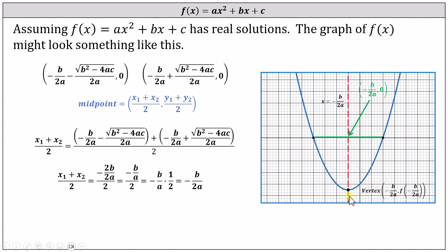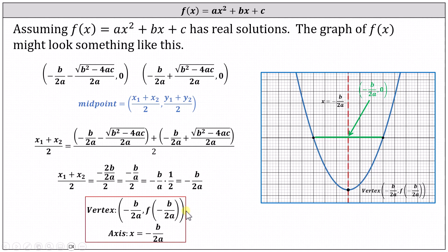The equation of the axis of symmetry must be x = -b/2a. To find any y-coordinate of a point on the graph, we evaluate the function at a given x-value, which is why the y-coordinate of the vertex is simply f(-b/2a). Hopefully this helps explain why the vertex of any quadratic function is the ordered pair (-b/2a, f(-b/2a)). Thank you for watching.